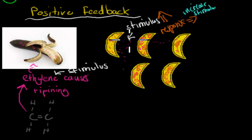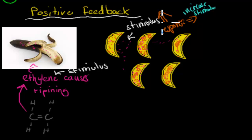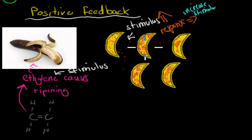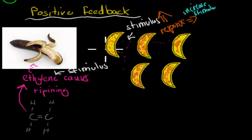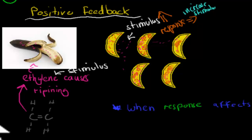Positive feedback is the idea that when the banana picks up the stimulus, it doesn't try to keep it at a constant, fine-balance level. Instead, once it picks up the stimulus, it actually increases it — it brings up the production of ethylene to make it ripen even faster. That's why we shouldn't put a really ripe banana next to unripe bananas — it will make the other bananas ripen even faster. That's an example of positive feedback. And your intuition that body temperature is controlled with negative feedback was correct.